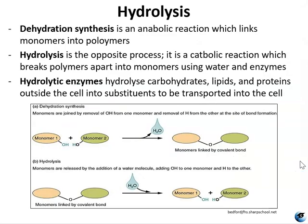Let's look at hydrolysis. Dehydration synthesis is the most common type of anabolic reaction and it's used to link monomers into polymers. Hydrolysis is exactly the opposite — it is a catabolic reaction which breaks polymers apart and forms monomers using water and enzyme. The 'hydro' part comes from water and 'lysis' means to break. Hydrolytic enzymes hydrolyze carbohydrates, lipids, and proteins outside the cell into their substituents to be transported into the cell. They are exoenzymes performing catabolic reactions.